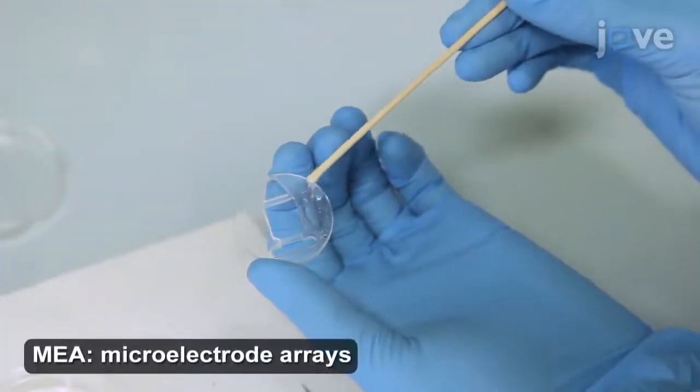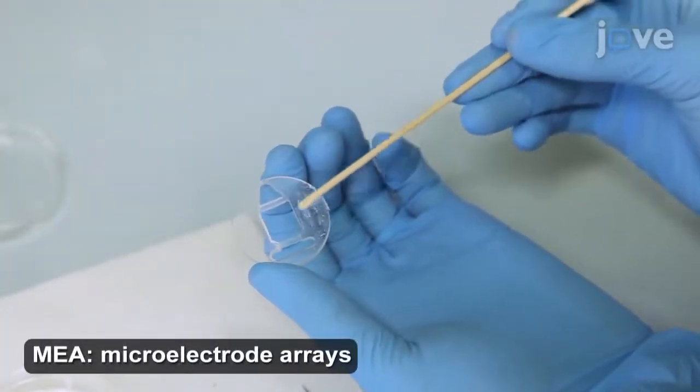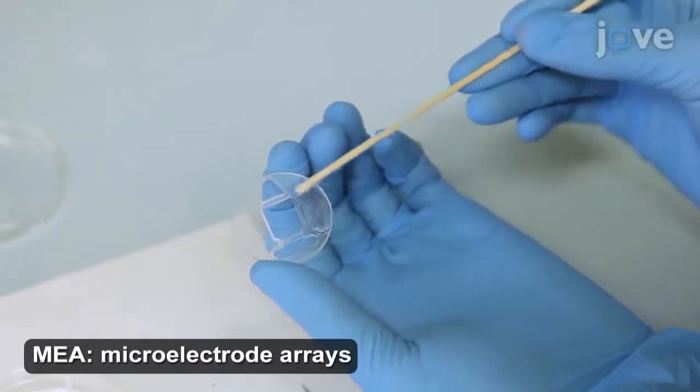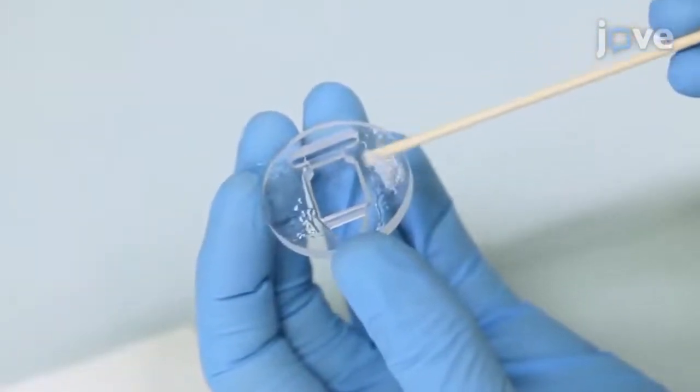To prepare the MEA, evenly spread the elastomeric sealant on the bottom surface of the recording chamber and make sure that there are no bubbles.